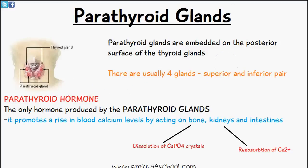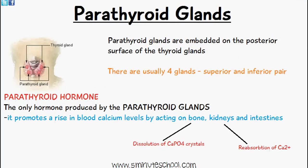The parathyroid hormone is the only hormone produced by the parathyroid glands. Parathyroid hormone is the main hormone produced and it promotes a rise in blood calcium levels by acting on bone, kidneys, and intestines.